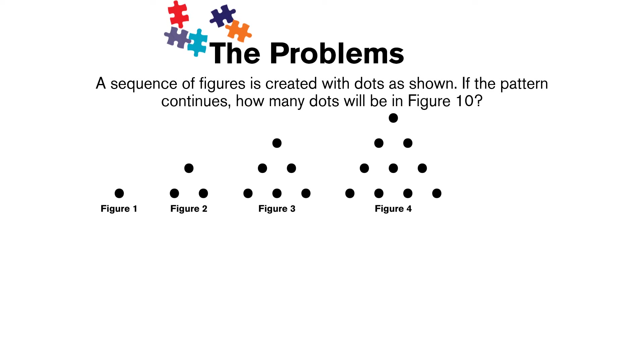You might notice that this is the same sequence of figures that you looked at in warm-up 1. In warm-up 1, you were asked to find figure 5, the next figure in this sequence. You might have noticed the pattern that it's a triangular pattern of dots, and each one you're adding another row to make that triangle a little bit bigger. Your next row you add is always one more than the previous row.